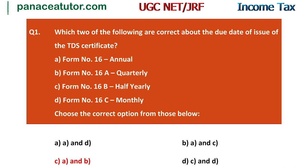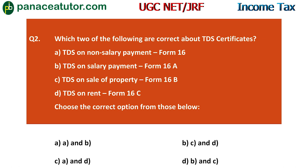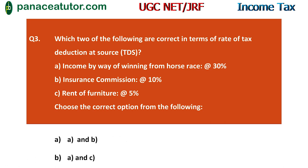Question 2: Which of the following are correct about TDS certificates? The option 'TDS on non-salary payment — Form 16' is wrong because Form 16 is for salary payments; non-salary payments use Form 16A. The correct answers are C and D: sale of property uses Form 16B, and rent uses Form 16C. Options A and B are reversed, so the correct answer is B — that is, C and D.